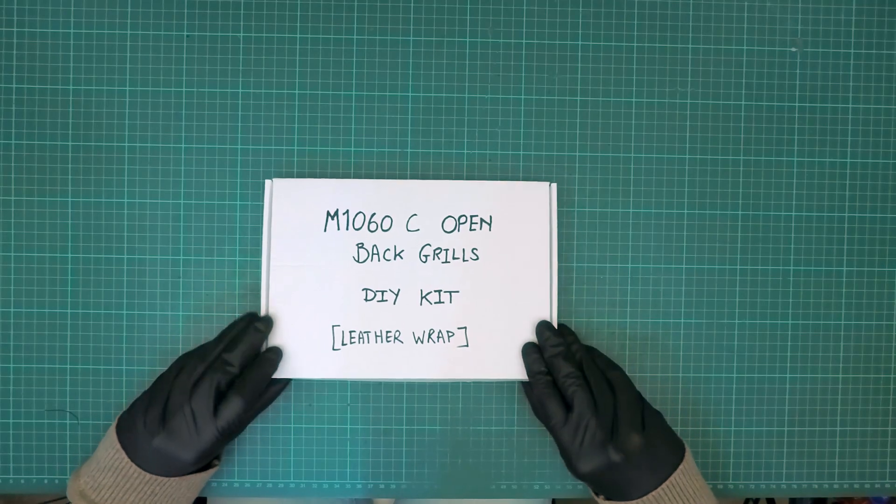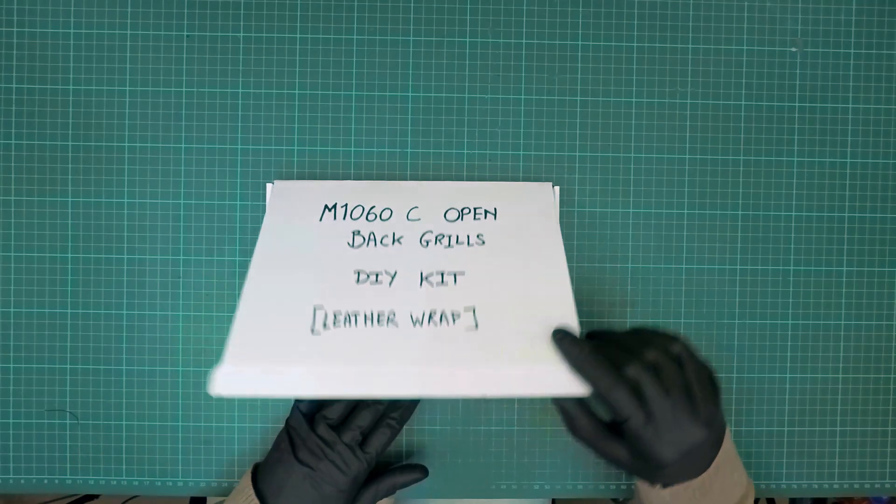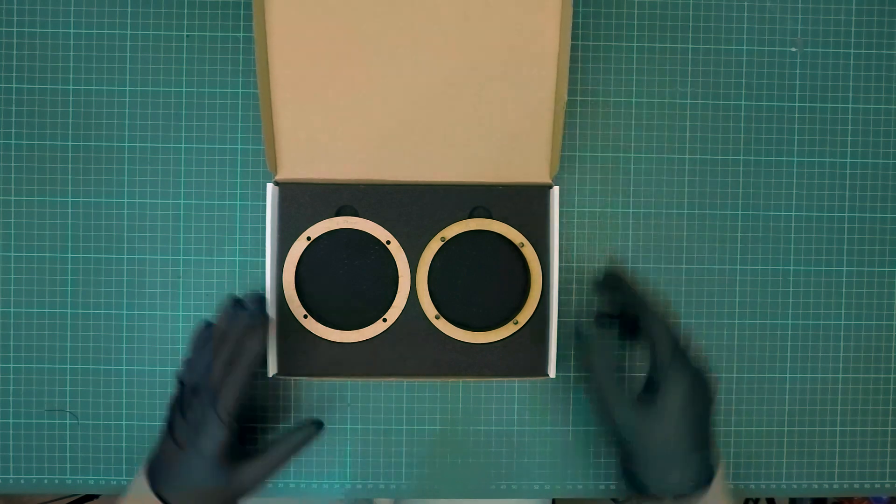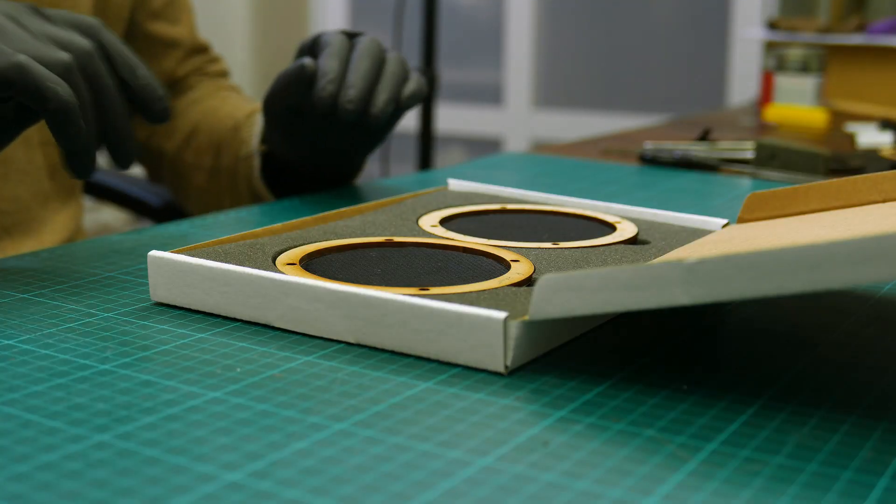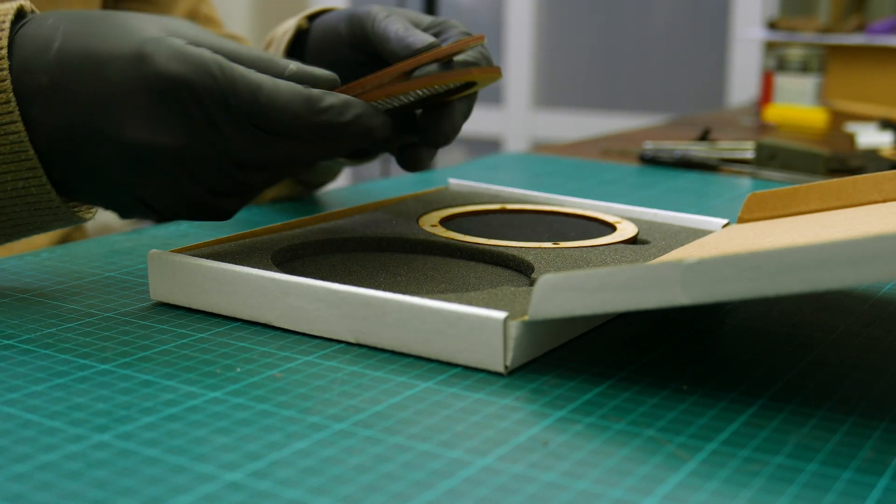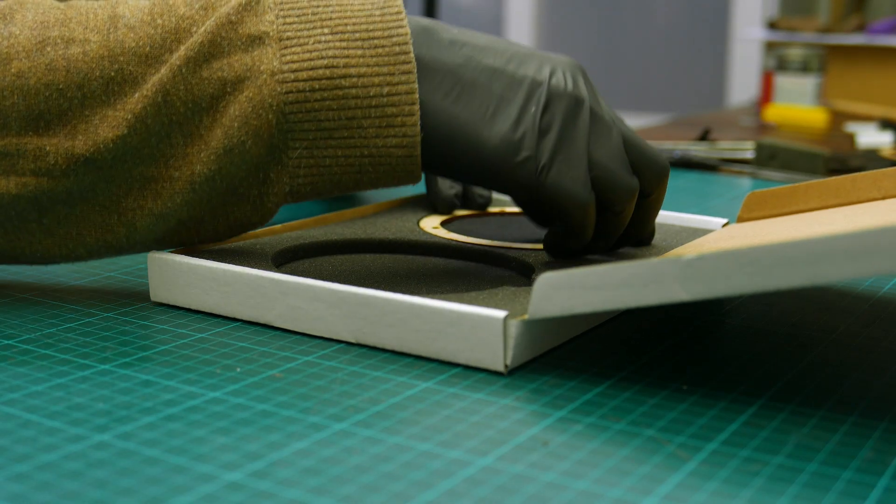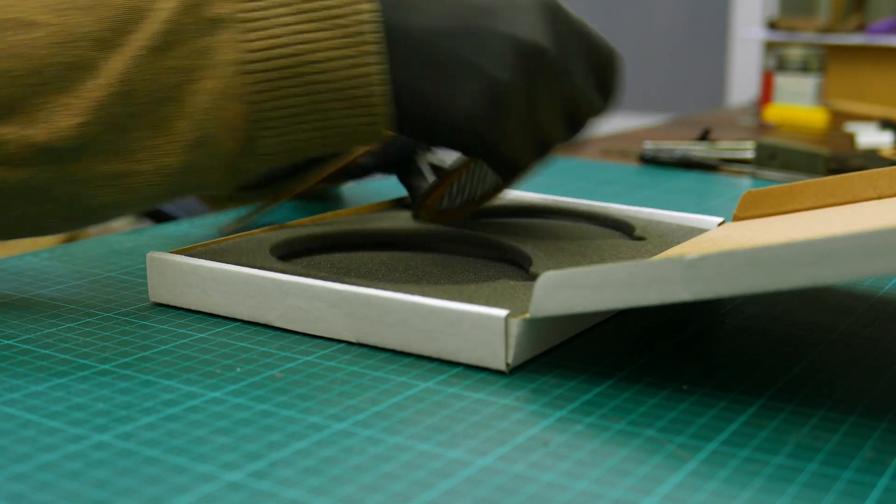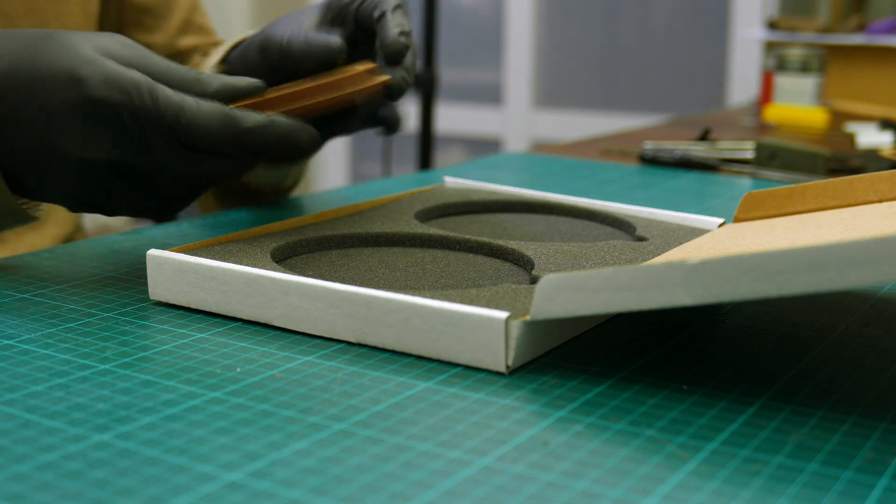I received quite a few requests on how to do the finishing on the M1060C open grills DIY kit. In this video I'll show you how it can be leather wrapped and glued together to be used on your M1060C headphones.